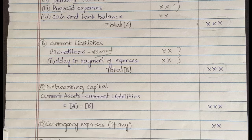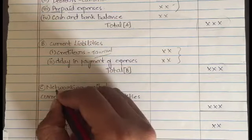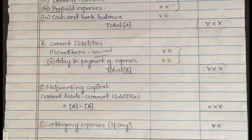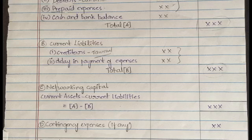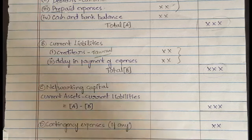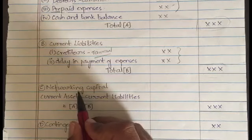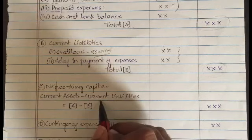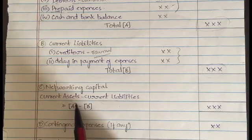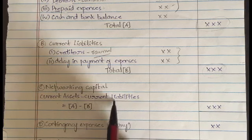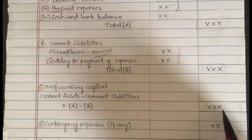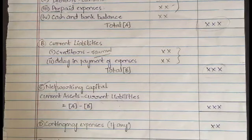After calculating current assets and current liabilities, the next step is to calculate the net working capital. We already learned that there are two types of working capital — gross working capital and net working capital — and net working capital equals current assets minus current liabilities. So we calculate net working capital by subtracting current liabilities from current assets: A minus B gives you the net working capital.